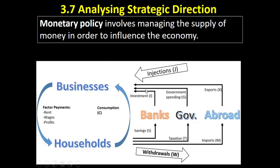Here's our circular flow of income, with each of these arrows representing a flow of money — either around the economy between businesses and individuals, or being withdrawn from or injected into the economy.